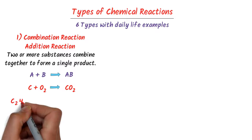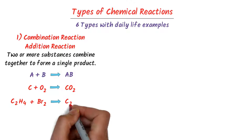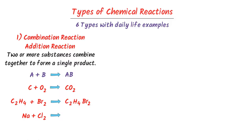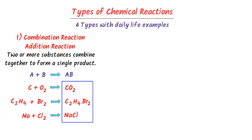Secondly, ethene plus bromine gas would combine together to form ethene bromide. Thirdly, sodium plus chlorine gas would combine together to form sodium chloride. So two different substances combine together to form a single product. These types of reactions are called combination reactions or addition reactions.